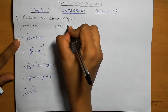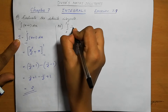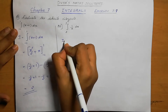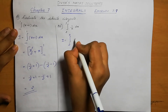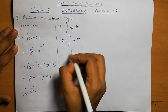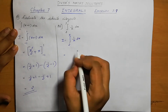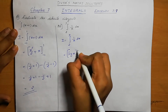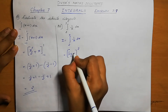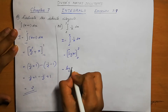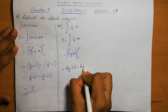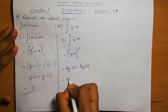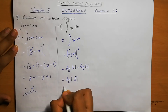Question number 2. Integral 2 to 3 of 1 by x dx. We can write i equal to integral 2 to 3 of 1 by x dx. The integral of 1 by x is log x. So we have log x within the limit 2 to 3. Applying upper limit minus lower limit: log 3 minus log 2. Using log a minus log b equals log a by b, the answer is log 3 by 2.